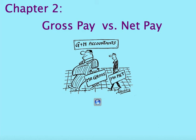Today we're going to start a new chapter talking about net pay. In chapter one we spent a couple of weeks discussing how to figure out what your gross pay would be. That gross pay is the pay you earned whether you got paid hourly, salary, or some other method. The gross pay is the total income that you have earned.